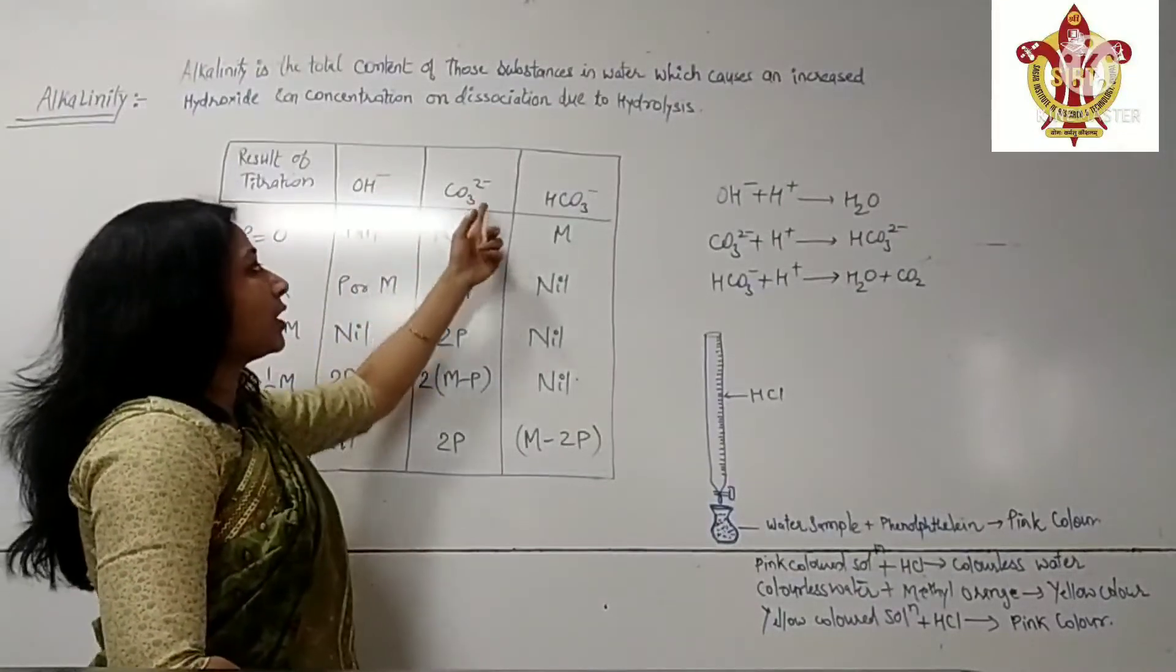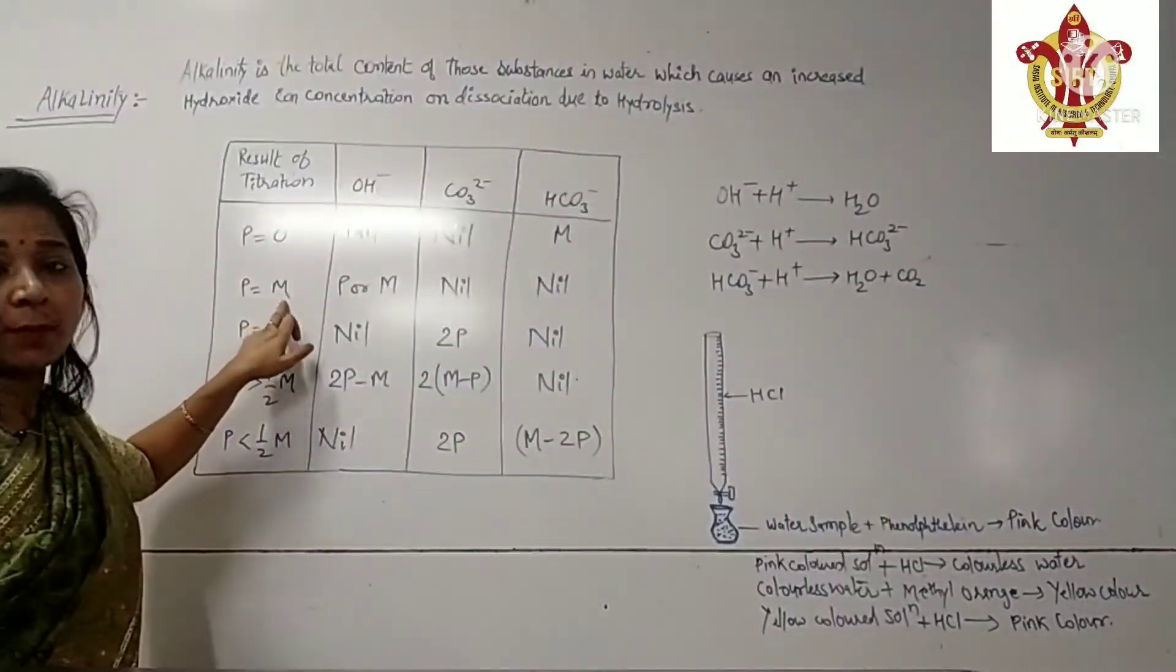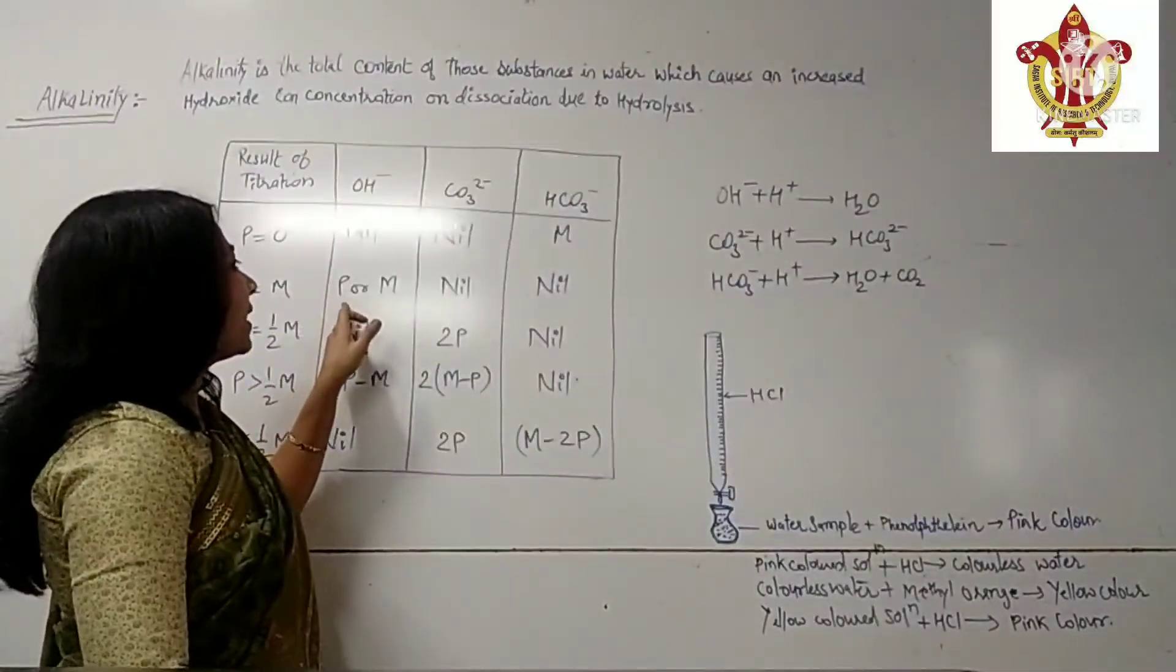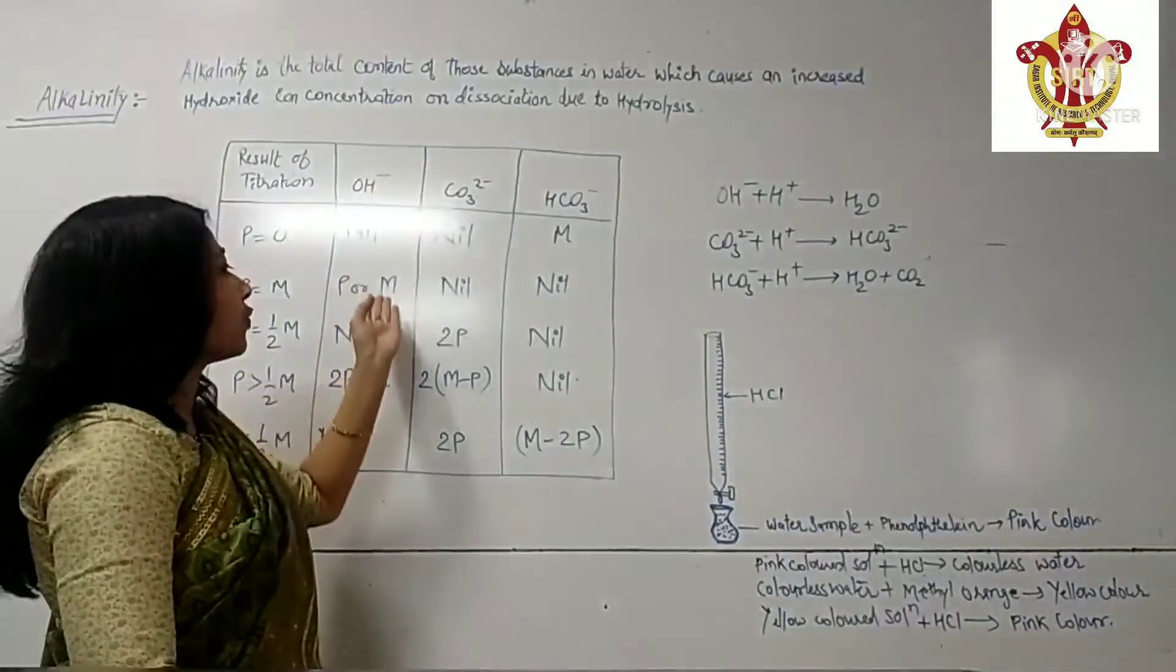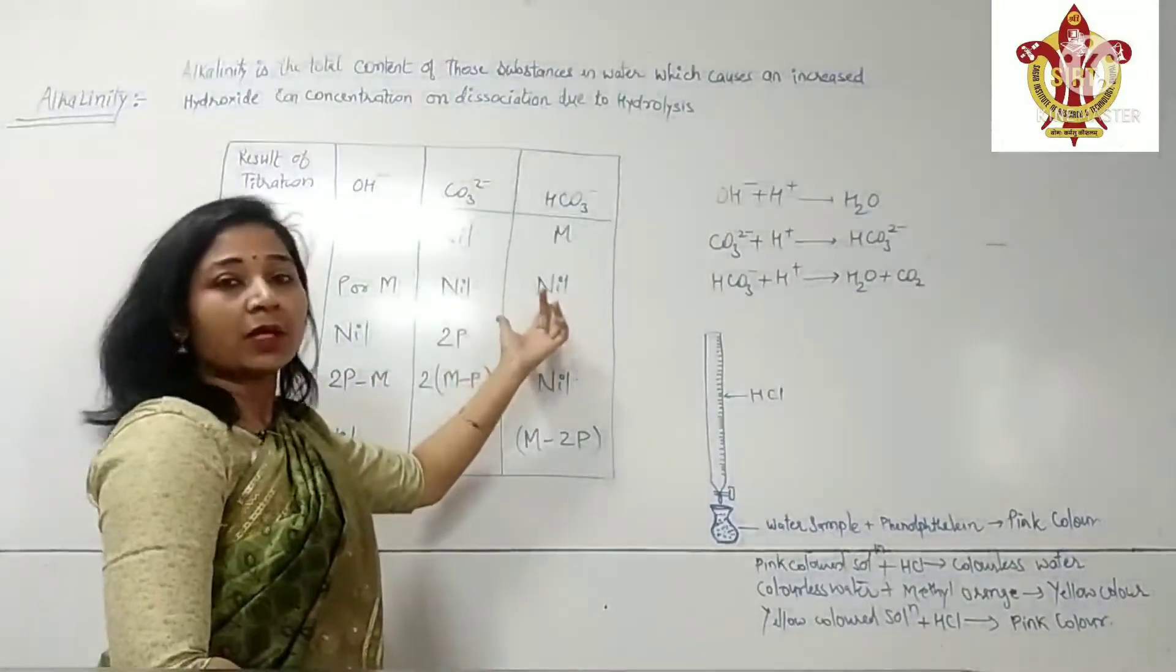Because OH ion is nil, carbonate is nil, and bicarbonate is M. When P is equal to M, at that case, P or M is the value of OH ion. Only OH ion is present, carbonate and bicarbonate are nil.